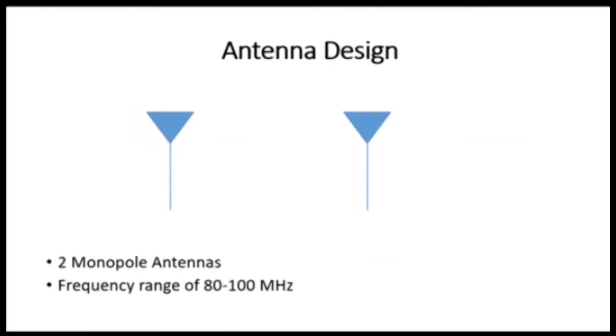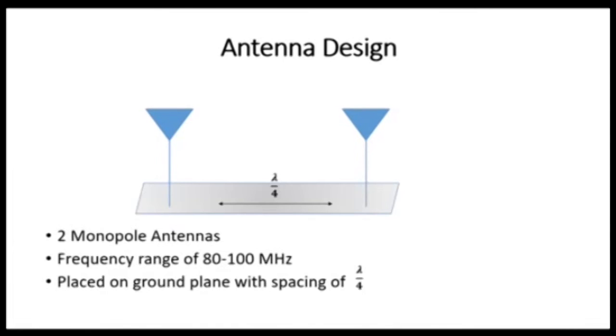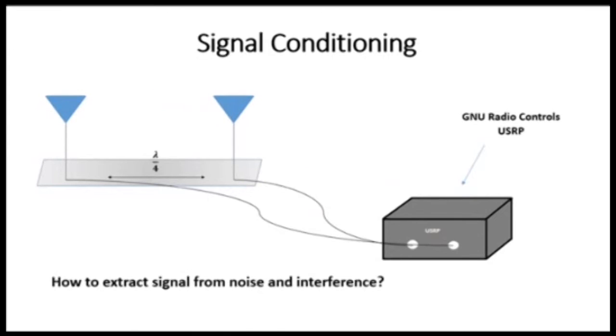Two monopole antennas are designed which can receive frequencies in the range of 80 to 100 MHz. These are placed on a ground plane with the spacing of lambda over 4 to reduce ambiguities. The signals picked up by the antennas are transferred to the USRP into GNU radio.